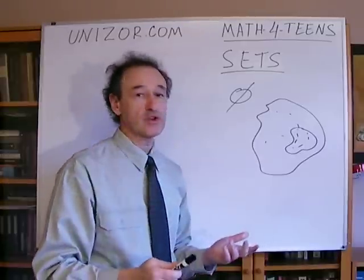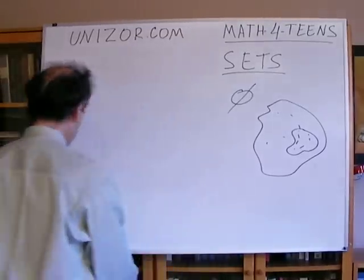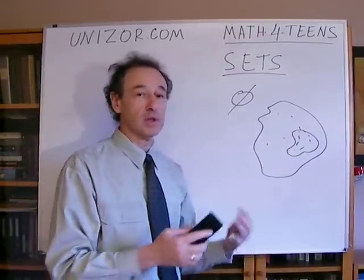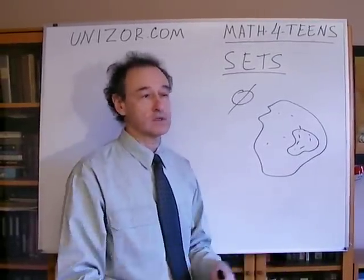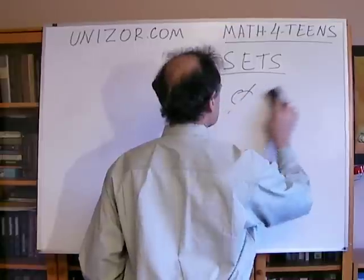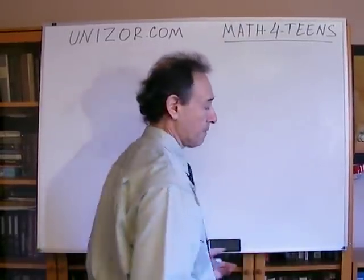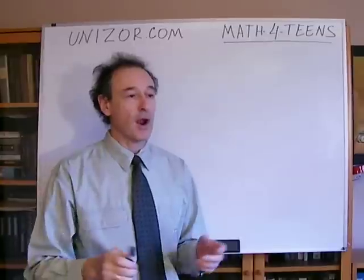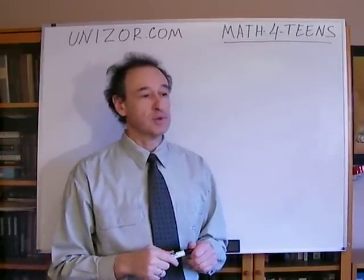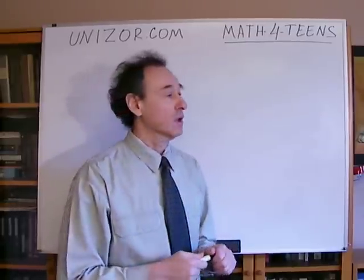Now, a few operations which you can do based on set theory. The only thing we are talking about right now is whether an element belongs to a set or does not belong to a set. There are certain operations on sets you can imagine. For instance, if you take all people who were born prior to the year 2000, and people who were born from 2000 to 2001.